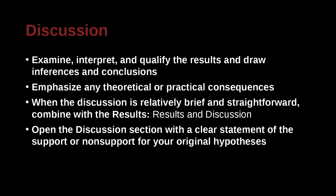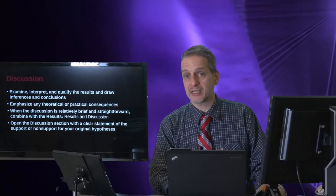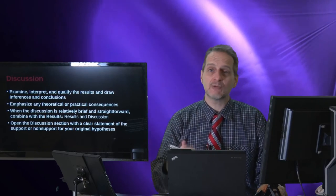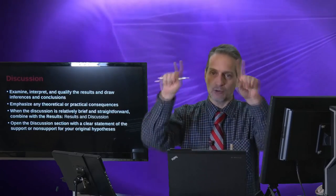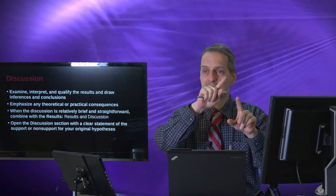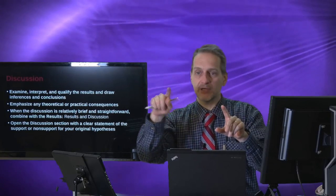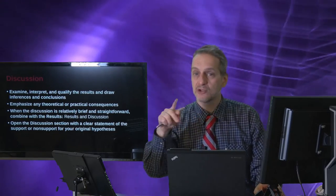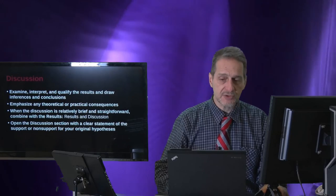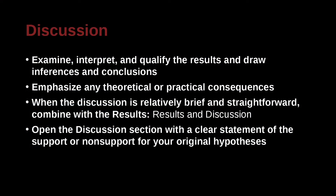Open the discussion section with a clear statement of the support or non-support of the original hypothesis. So usually when you begin the discussion section, you will say hypothesis one is rejected, or hypothesis one is accepted. So you make it very clear right from the beginning what happened. You may even repeat the hypothesis. So for example, hypothesis one, and then quote parentheses, and then you say hypothesis one, A will be bigger than B under the situation of. And then you explain that this was found to be true, or this was rejected.